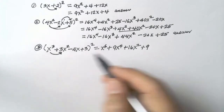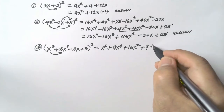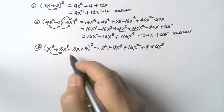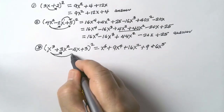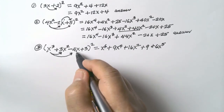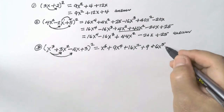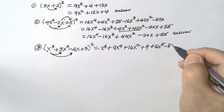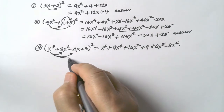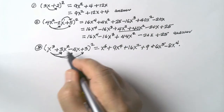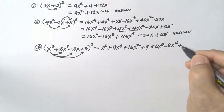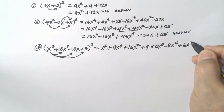Times 2, so that becomes plus 6x to the exponent of 5. Then: x cubed times negative 4x = negative 4x to the exponent of 4, times 2 = negative 8x to the exponent of 4. And x cubed times 3 = 3x cubed, times 2 = plus 6x cubed.